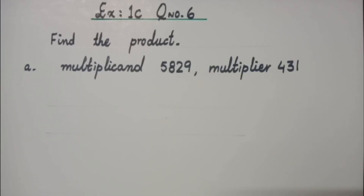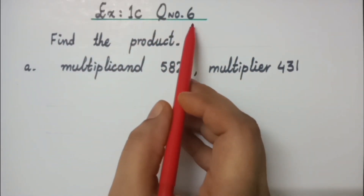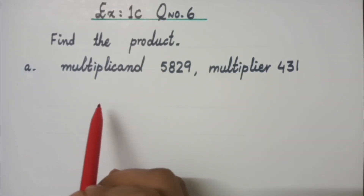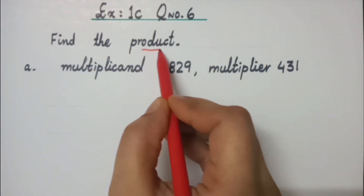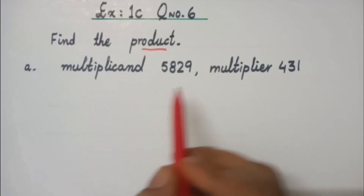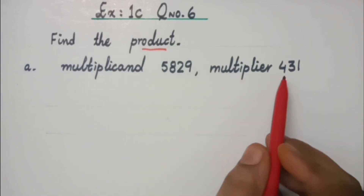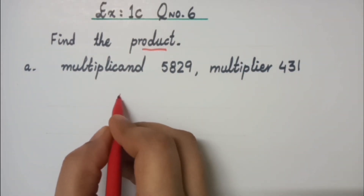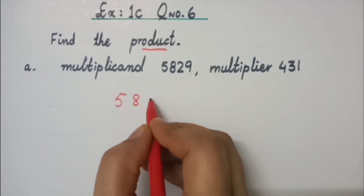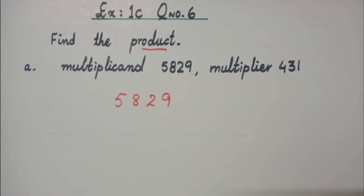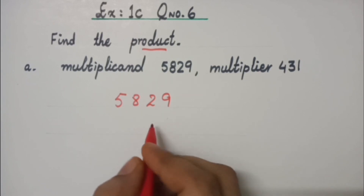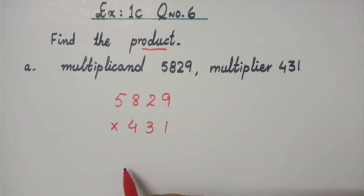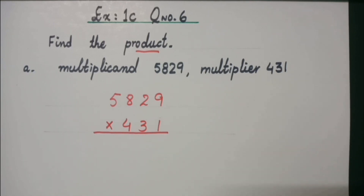The next question is exercise question number 6. It is almost the same — they are asking us to find the product. Product simply means the answer of multiplication. The multiplicand is 5,829 and the multiplier is 431. The multiplicand is the digit which has to be multiplied, and the multiplier is 431. Can you find its product easily? Do it now.